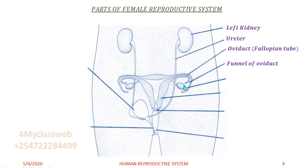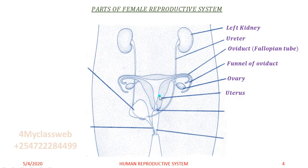The oviduct, towards the head near the ovaries, is funnel-like in shape so that the ovum can be accommodated and pass through that tube. There are two ovaries — one on the left, the other on the right. Below that is the uterus, also called the womb, with its muscular walls. Below the uterus is the cervix, which separates the uterus from the vagina.